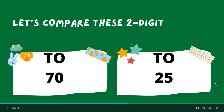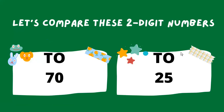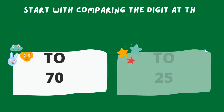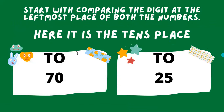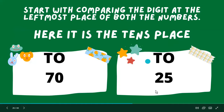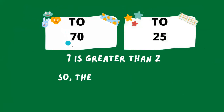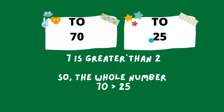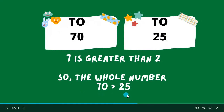Let's compare these two-digit numbers: 70 and 25. Start by comparing the digit at the leftmost place of both numbers — here it is the tens place. Seven is greater than two, so the whole number 70 is greater than 25. We can also write this using the greater than sign: 70 is greater than 25.